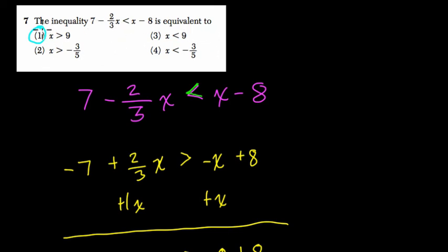Actually, excuse me, I'll pick 30 because I see I have thirds here and I want to multiply by a multiple of thirds. I could have chosen a smaller multiple, but I'll use 30. So 7 minus 2/3 of 30 should be less than 30 minus 8.